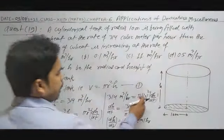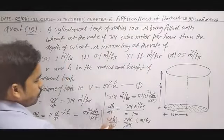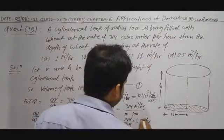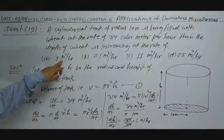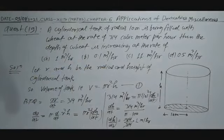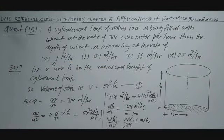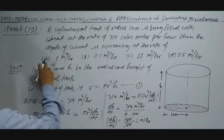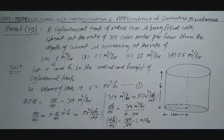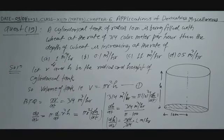The radius is 10 meters and the unit of dh/dt is meter per hour. In this question, options are given in cubic meters. The answer is 1 meter per hour, so option A is the correct answer.